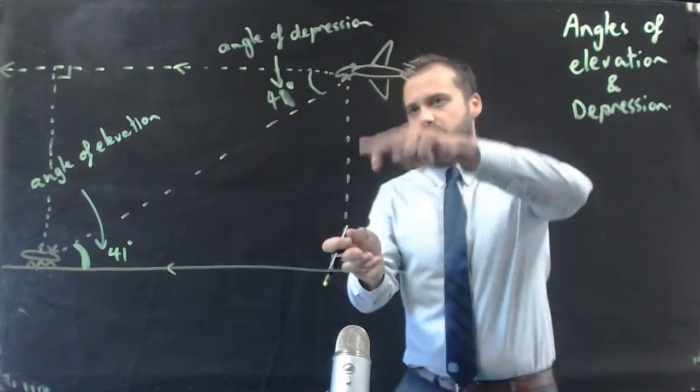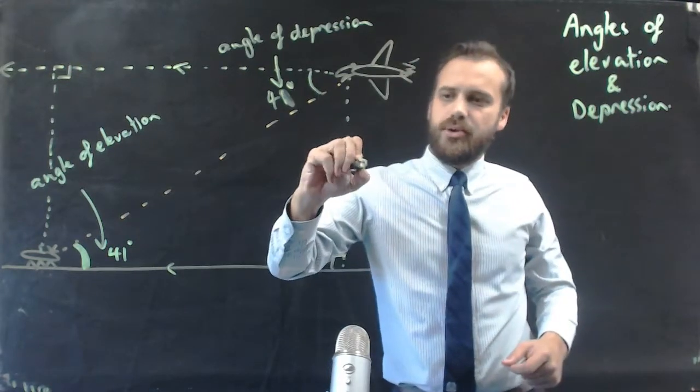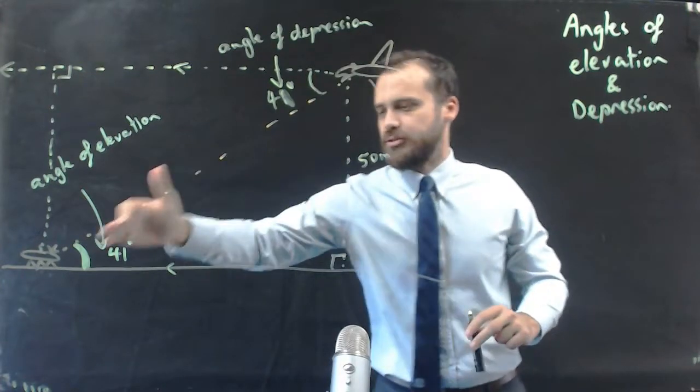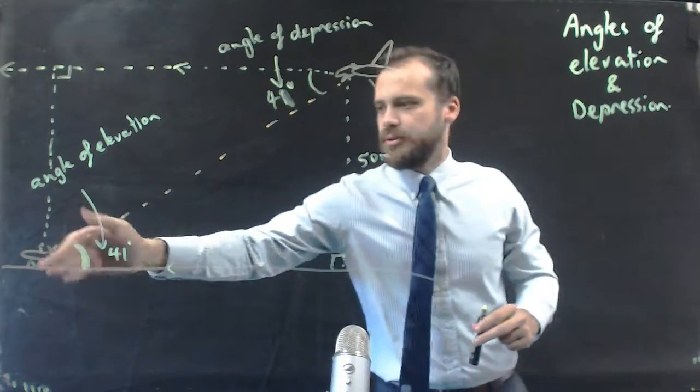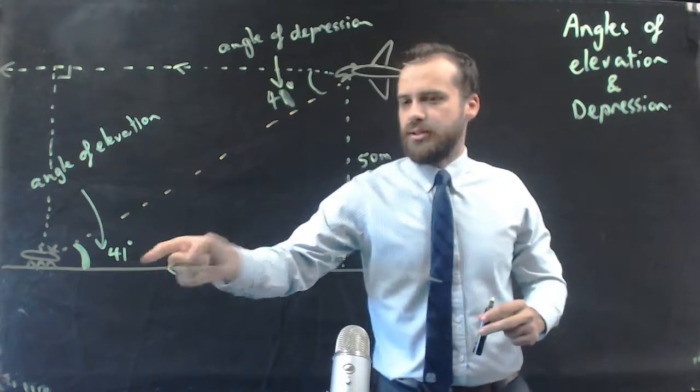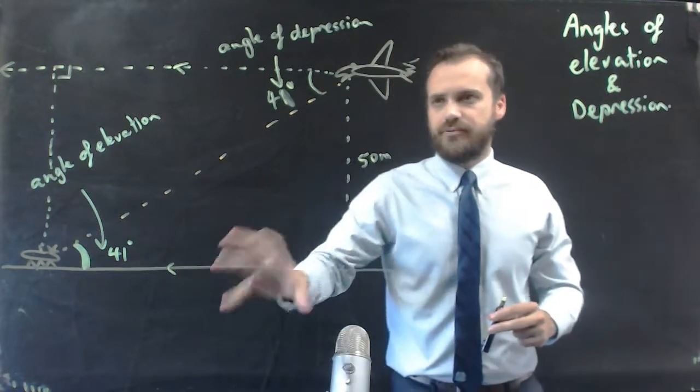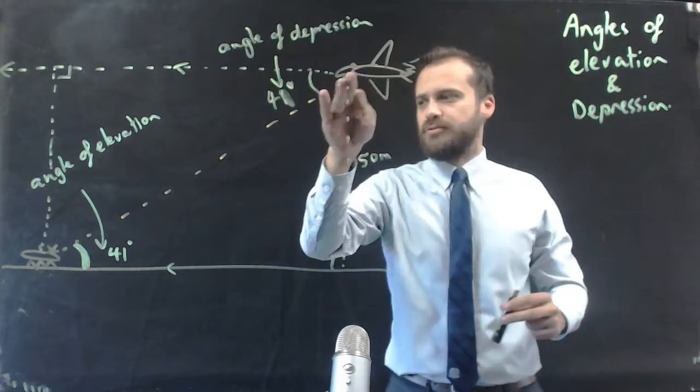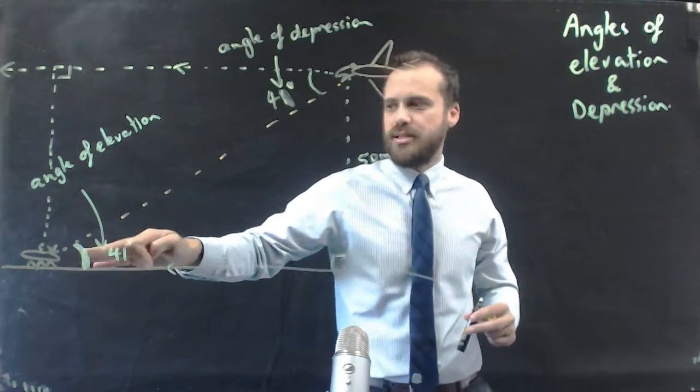Say I know how high the bird is. Let's say I know that the bird is 50 meters above the ground. What I have is a right angle triangle with an angle and a length, and I can find pretty much anything else. I can find the distance that the bird would have to fly to swoop down to get the ant.